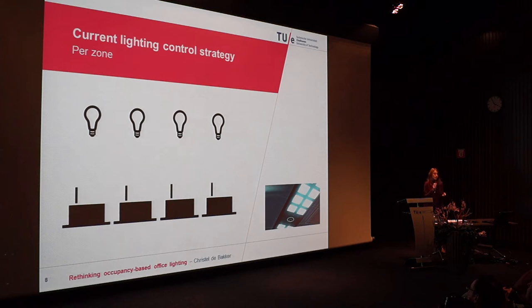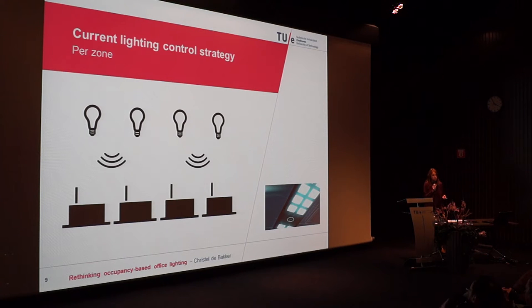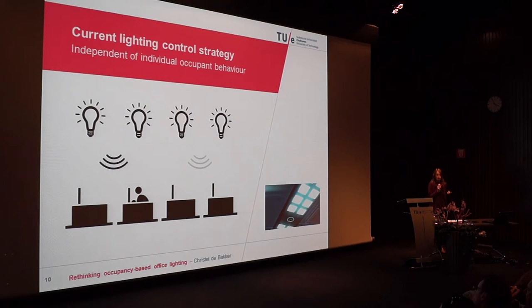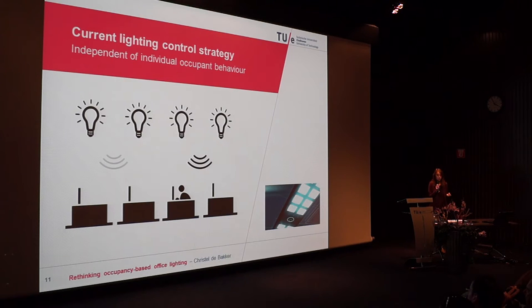Currently, lighting is controlled per zone, where a zone consists of four luminaires, typically covering four desks. Above each two desks, a motion sensor is placed, communicating to the four luminaires above those desks. So if the left motion sensor measures occupancy at one of those two desks, all four luminaires are switched on — and the same applies to the other motion sensor. Whether there is one or three occupants, the same lighting control scenario is applied. This means lighting is not tailored to the actual use of space, and energy is wasted.